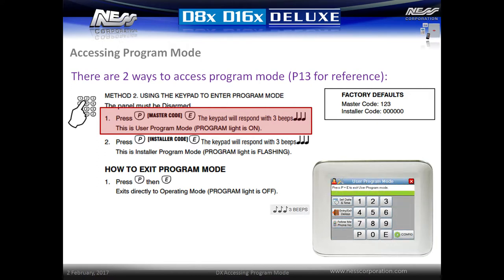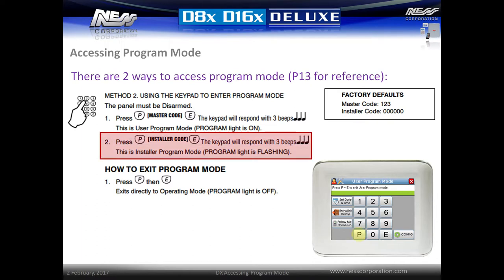Three beeps will be heard from the keypad and the program light will be on solid on an LCD keypad, or display user programming mode on a navigator. From user program mode, enter P followed by the installer code followed by E. By default this is P followed by the number zero six times followed by E. Three beeps will be heard and the keypad will now display installer mode, or for LCD keypads the program icon will be flashing.